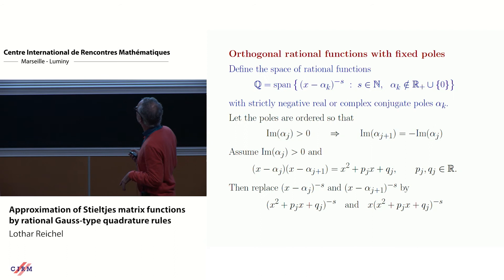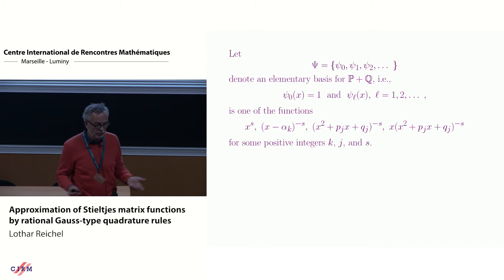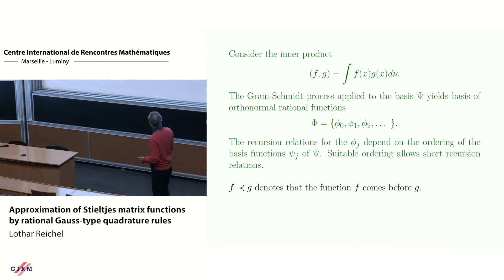We will just go over this very quickly. The set Q is this set of rational functions. And cap P is a set of all polynomials. And what we will do then is we will define a sequence of elementary basis functions for P plus Q. So here they are, the elementary basis functions. It's one of these functions here listed. And now the ordering of these functions is important. Because this also happens if you just work with polynomials. If you start with a polynomial of degree 10, followed by a polynomial of degree 5, and then a polynomial of degree 7, there's not going to be a three-term recurrence relation.